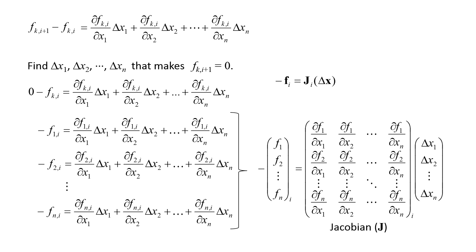Since we are dealing with a system of linear equations, we can use techniques such as Gaussian elimination to solve for the delta x terms. Recall that delta x is the difference between the values of the variables at the next step i plus 1 and the values at the current step i. Once we obtain the delta x values, we can determine the revised values for the variables at the next step, xi plus 1.